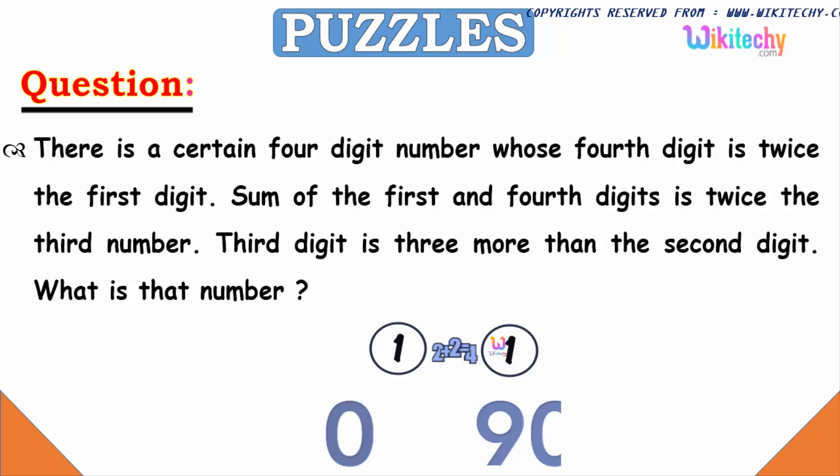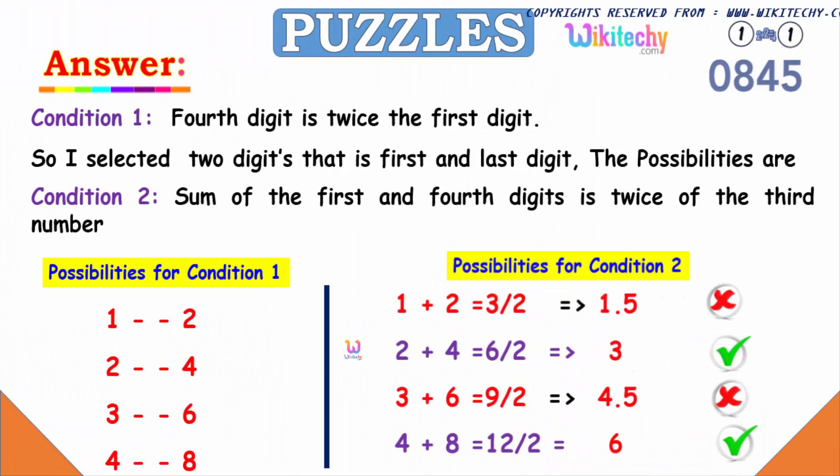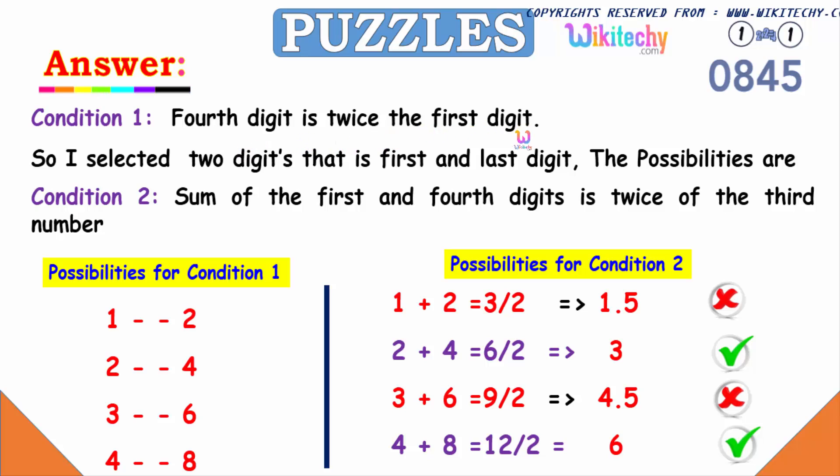Let's move on. Now, the condition is the fourth digit is twice the first digit. So if the first digit is one, the fourth is twice, two. If it is two, it's twice four. If it is three, twice six. And four, twice eight. It can't be five because it will be ten. So these are the four possibilities.